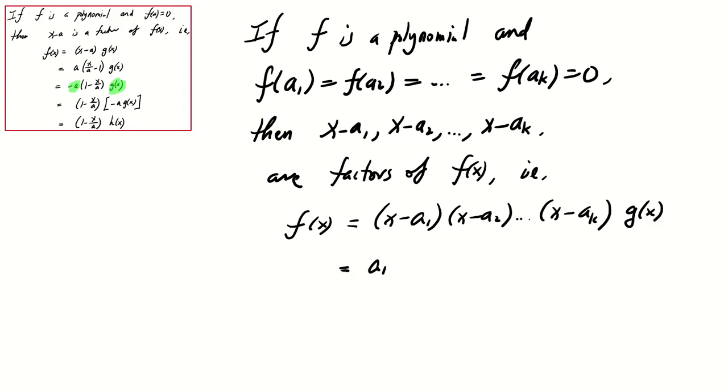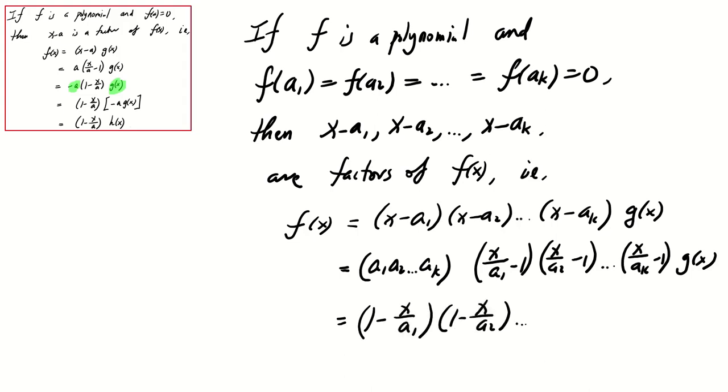Using the similar method, we can factor it as a1 times a2 times ... times ak, times (x over a1 minus 1) times (x over a2 minus 1) all the way to (x over ak minus 1) times g(x). We can further modify as (1 minus x over a1) times (1 minus x over a2) all the way to (1 minus x over ak), and the rest of it just classified as h(x).